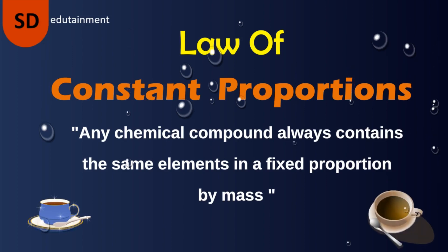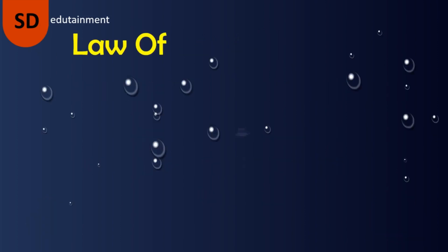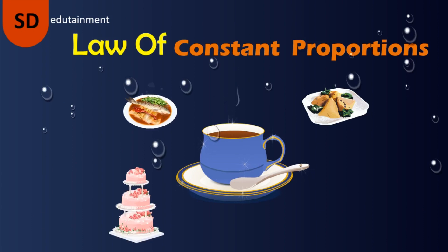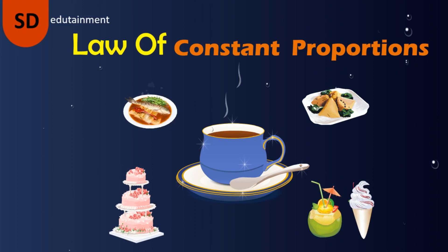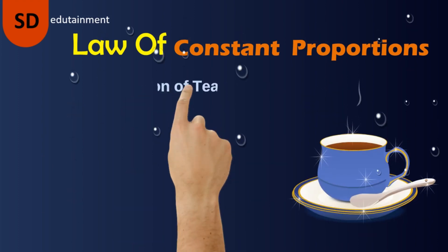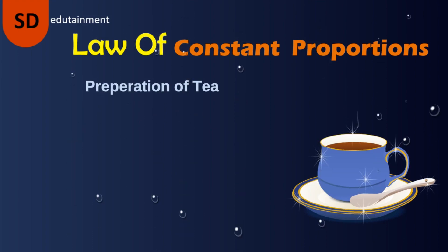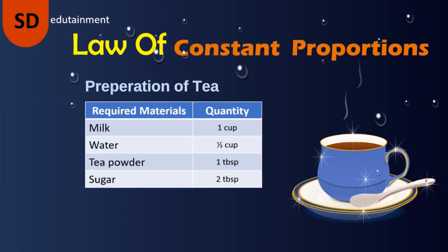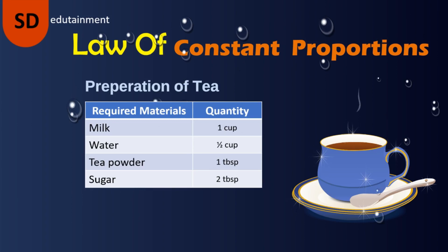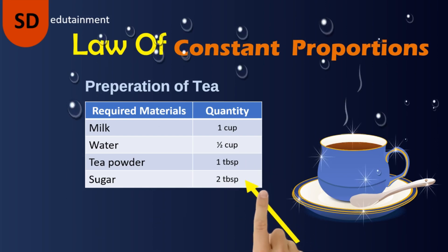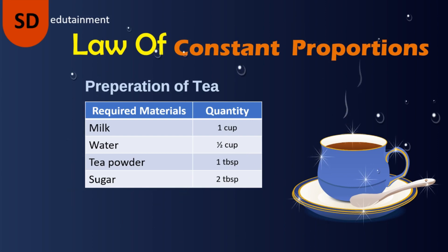Let us try to understand this in a simple way. Consider the preparation of tea — it may be a five-star hotel chef or your mother, whoever is preparing tea, they have to take the required materials in a fixed quantity. To prepare one cup of tea, we take one cup of milk, half a cup of water, one tablespoon of tea powder, and two tablespoons of sugar.